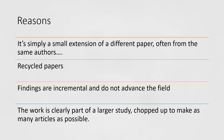Sometimes the paper may be rejected for additional reasons. Journal administrators or editors may identify that the paper is a recycled one — a big paper divided into different small papers. If the paper is identified as recycled, it will be rejected at the desk. The findings are incremental and do not advance the field; the work is clearly part of a larger study, chopped up to make as many articles as possible. It is better not to submit recycled papers.